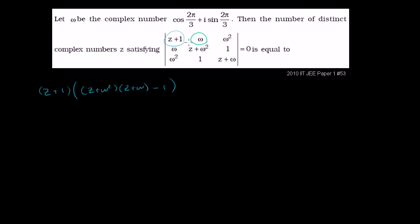We have to swap signs — there's that checkerboard pattern when you evaluate determinants. So minus omega times, blocking out that row and column, the sub-determinant is omega times z plus omega. Multiplying that out: z·omega plus omega squared minus omega squared times 1, so minus omega squared. That simplifies nicely.